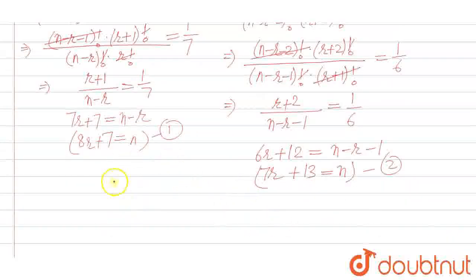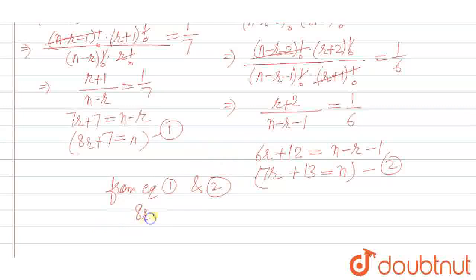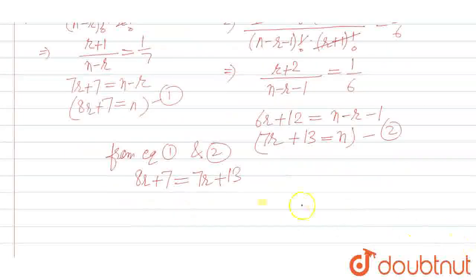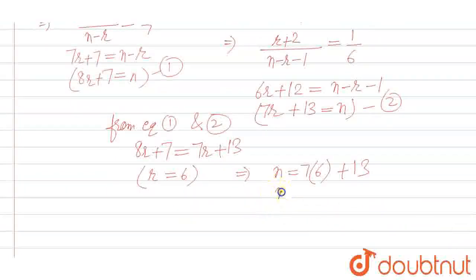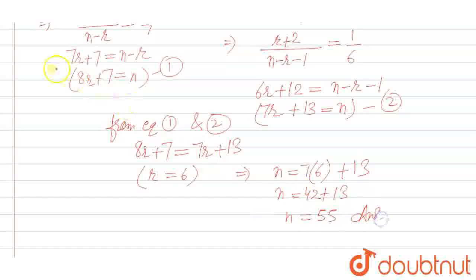From equations 1 and 2, we equate the values of n: 8r+7 = 7r+13. So r = 13−7 = 6. Then n = 7×6+13 = 42+13 = 55. So the value of n is 55.